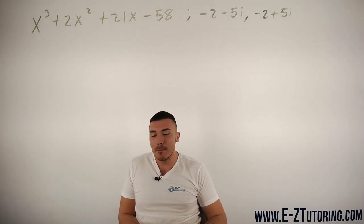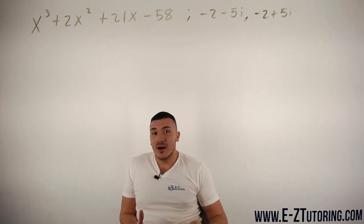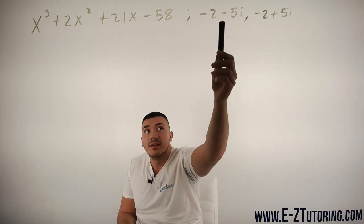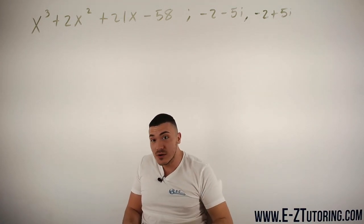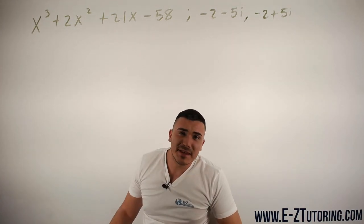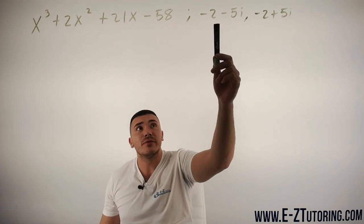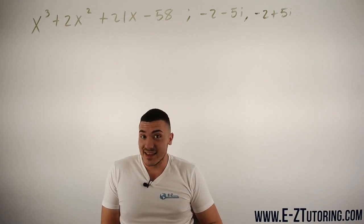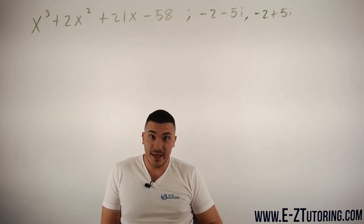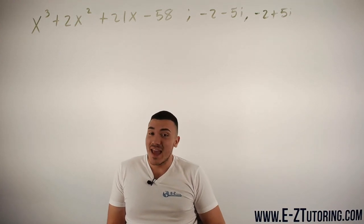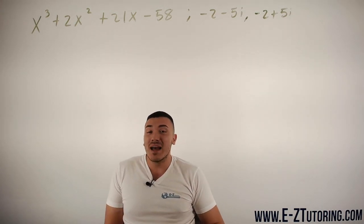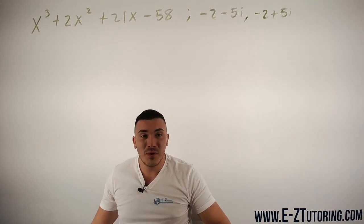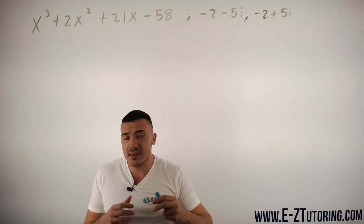So normally, if you've seen my video on how to find the remaining zeros, you know that you would use synthetic division, divide by your root and see what you're left with. But in this case, can we use synthetic division with a complex number? Yes, you can. Is it recommended? No, it is not. You can do it, you will find your answer, but I will show you guys a better method.